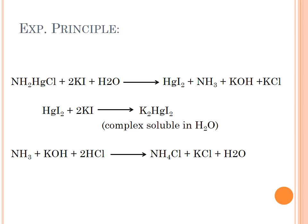Regarding the behavior of HgI2: during the process, ammoniated mercury reacts with potassium iodide (KI) to produce mercuric iodide (HgI2). This HgI2 then reacts with excess potassium iodide to form K2HgI4, which is a soluble complex. Then the ammonia is reacted with KOH to produce ammonium chloride (NH4Cl) plus KCl plus water.